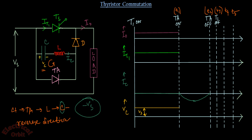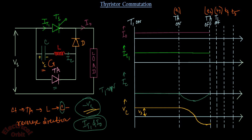Now what will be the current waveforms of I0 and IT1? When the capacitor is discharging through TA, IT1 and I0 will flow as usual because T1 is still on — it will not disturb the T1 current. So I0 and IT1 continue as before. And VC is now negatively charged, so the VC waveform shows minus VS.